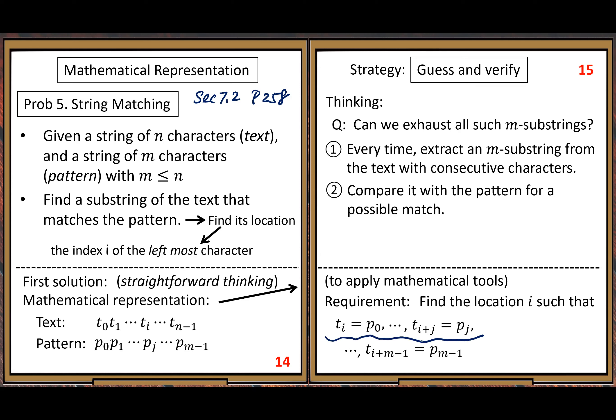How many comparisons do we need to do? We need to do character-by-character comparison — a total of m character comparisons per substring. Now let's answer this question: how many such m-substrings can we find in the given text?